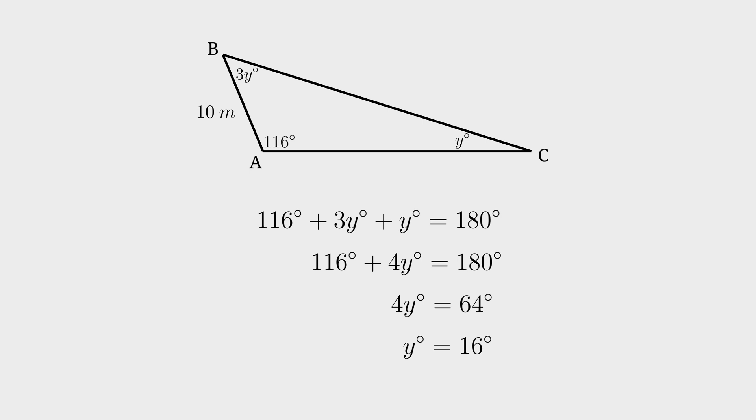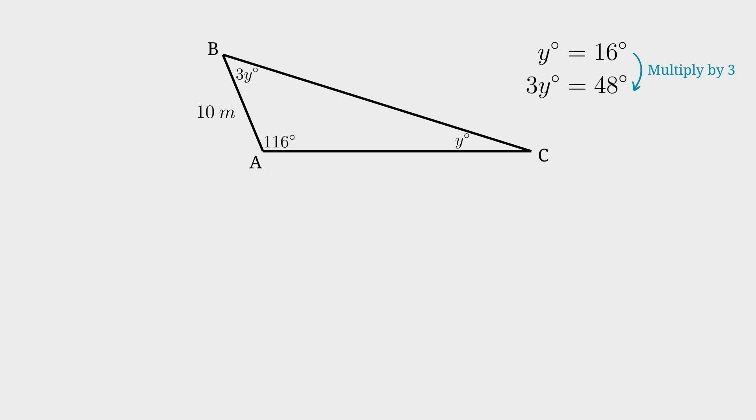Angle C, which is Y, will then be 16 degrees and angle B is 3Y. If you multiply 3 by 16, it will be 48. So angle B is 48 degrees. Write down the angles in this triangle. Now we can work out the side lengths.